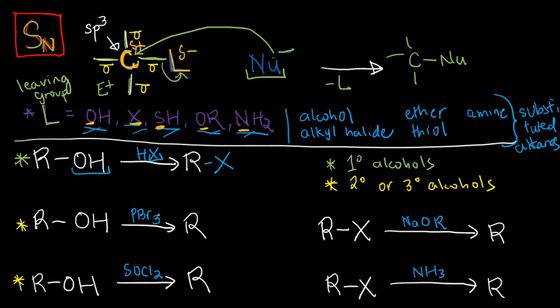Or, if I have PBr3, I can use this as a brominating agent to replace the OH here, giving us RBr or an alkyl bromide. Done. Or maybe I could use SOCl2, often referred to as thionyl chloride, to provide us a chlorine atom to replace the OH. We now replace OH with chlorine. Done.